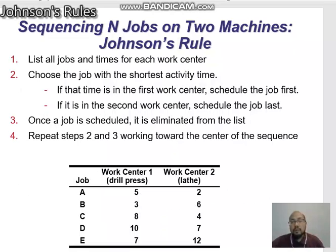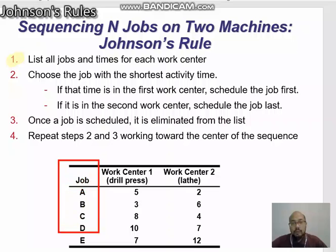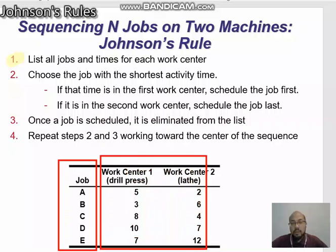In general there are four steps in Johnson's Rule. First, list all jobs and times for each work center. For example, here there are five jobs — A, B, C, D, and E — and the information of processing time at both work centers: work center one and work center two.